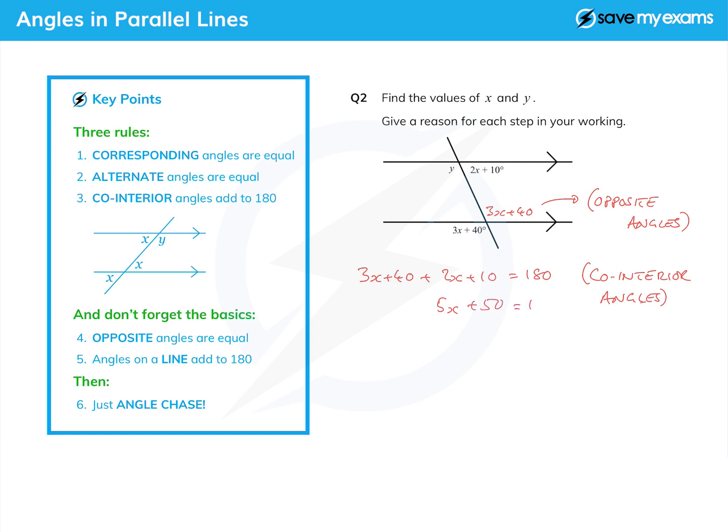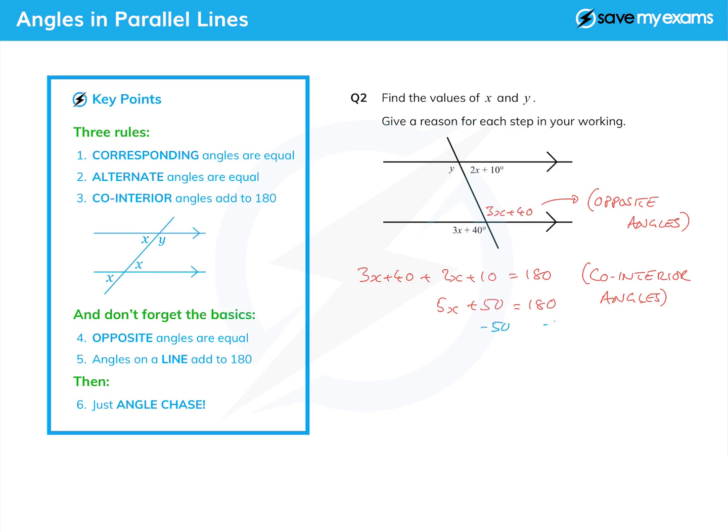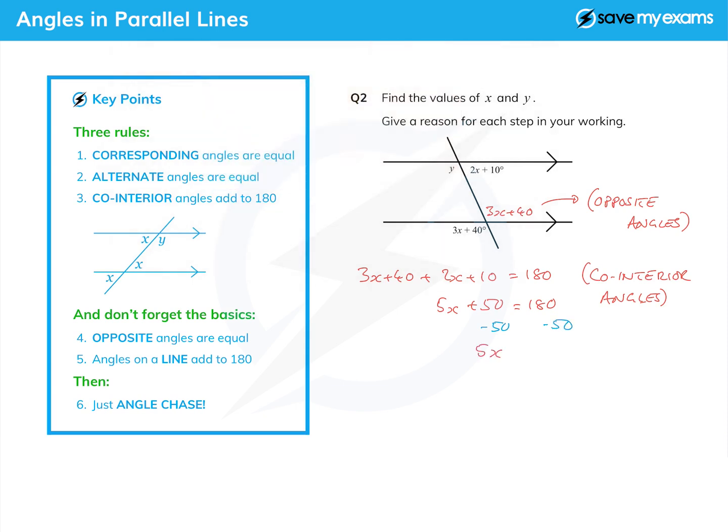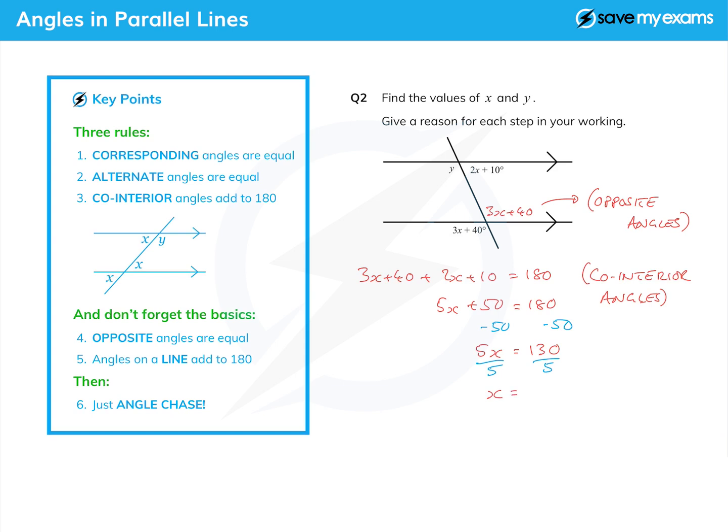Then we just solve that in the normal way. Subtract 50 from both sides, which gives me 5x equals 130. Divide both sides by 5 to give me x equals 130 over 5, which is 26 degrees - or 26, I don't really need the degrees because it's just a letter I'm trying to find.